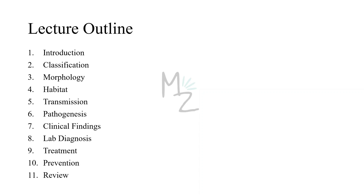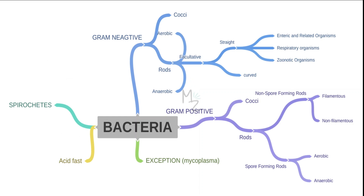Now we'll look at the lecture outline: classification, morphology, habitat and transmission, pathogenesis and clinical findings, lab diagnosis, treatment, prevention, and a recap at the end. Prior to talking about Serratia marcescens in detail, we should know how bacteria are classified.